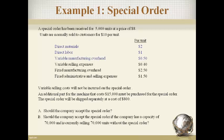The variable product costs — direct material, direct labor, and variable overhead — are always relevant to a special order because the products must be made before they can be sold. The variable selling costs that will not be incurred are not relevant because the company's total selling costs will not change. A change in total cost of the company is what makes a cost relevant. The listed fixed costs will not change if the special order is accepted; they are irrelevant and will not be included in the analysis.